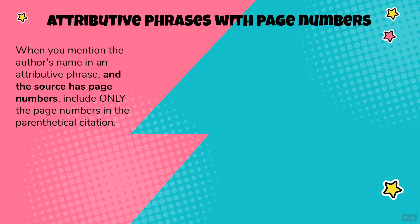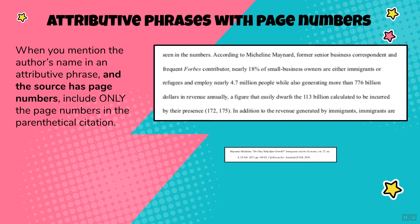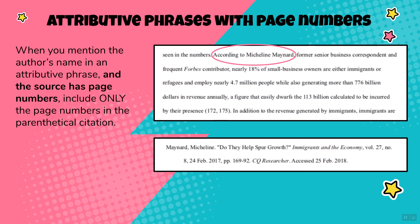When you mention the author's name in an attributive phrase and the source has page numbers, include only the page numbers in the parenthetical citation. Here, Micheline Maynard has been named as the author of the information in the sentence, and her name appears in the Works Cited page. Because there are page numbers in the Works Cited entry — indicating the writer was working with a PDF — you must include the page numbers in the parenthetical citation.